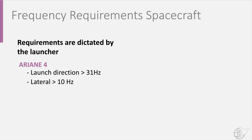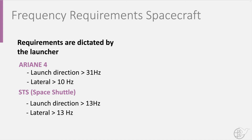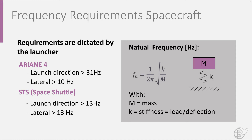The natural frequency of an object with mass m can be defined as 1 over 2π times the square root of the stiffness k over the mass m, with the stiffness k equal to load over deflection.